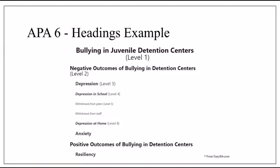Here are the heading examples for APA 6. I really don't expect you to use anything more than level one headings in a paper of this length, which will be centered and bolded. Anything beyond that gets into justified and bolded formatting, but I imagine you'll stick with level one headings, so it shouldn't be a big deal.